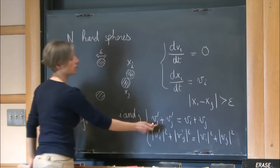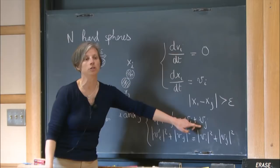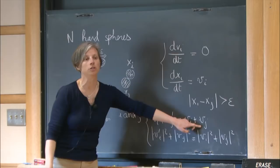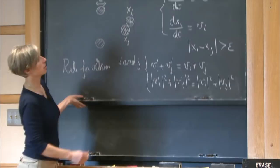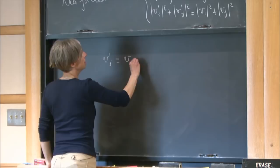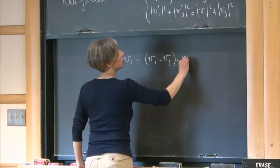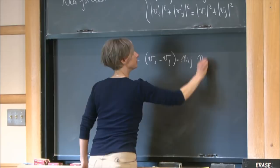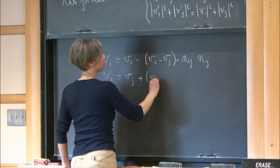The post-collision velocities can be written explicitly: v'_i = v_i - (v_i - v_j)·n_{ij} · n_{ij}, and v'_j = v_j + (v_i - v_j)·n_{ij} · n_{ij}, where n_{ij} is the unit vector between the two particles at collision. This is really the simplest possible system you can imagine.